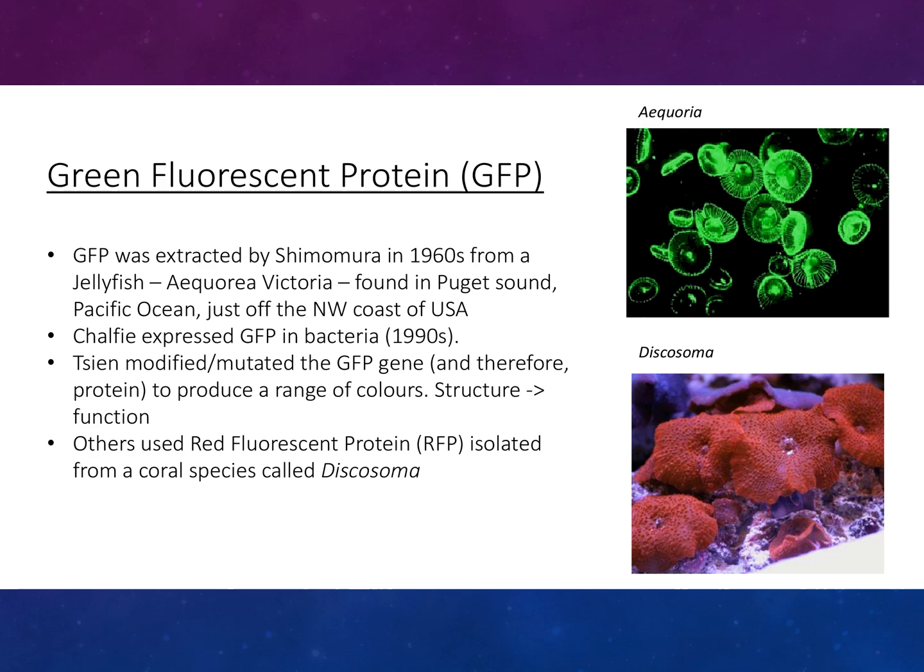GFP was extracted by Shimomura in the 1960s from a jellyfish, Aequorea victoria, found in Puget Sound, Pacific Ocean, just off the northwest coast of the USA. Chalfie expressed GFP in bacteria in the 1990s, and Tsien modified and mutated the GFP gene and therefore the protein to produce a range of colours.